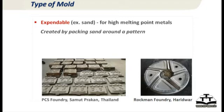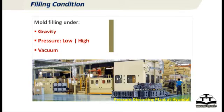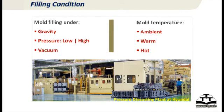We can also produce the mold in which you pour the metal. The mold can be either expendable, meaning you need a separate mold for every casting, or permanent, in which case the same mold can produce thousands to tens of thousands of castings. The mold can be filled under gravity, low or high pressure, or vacuum. Additionally, the mold itself can be at room temperature or as hot as the metal, as in the case of investment casting.